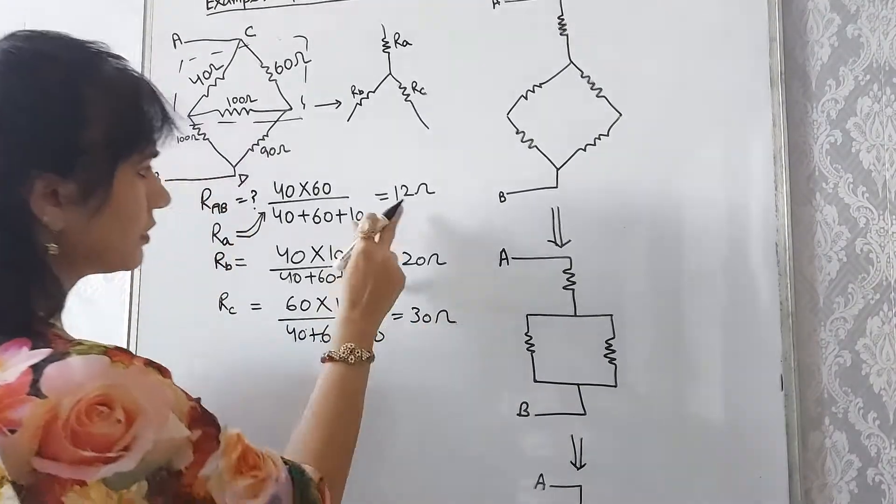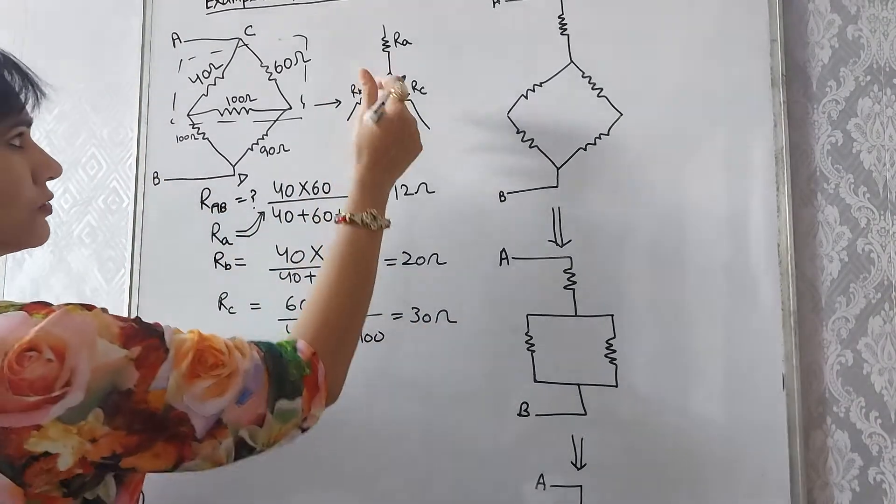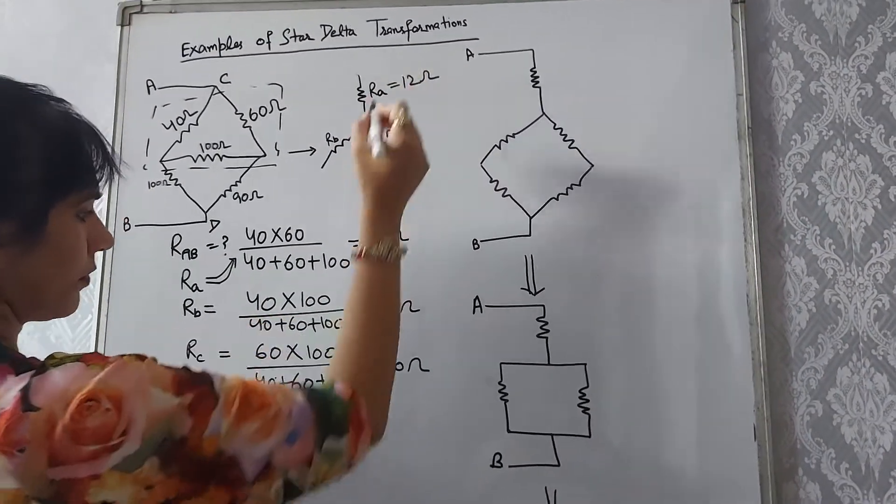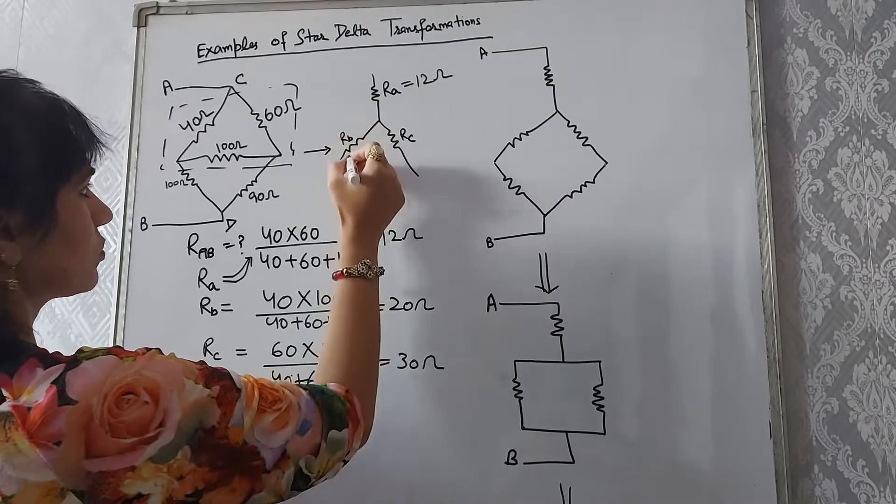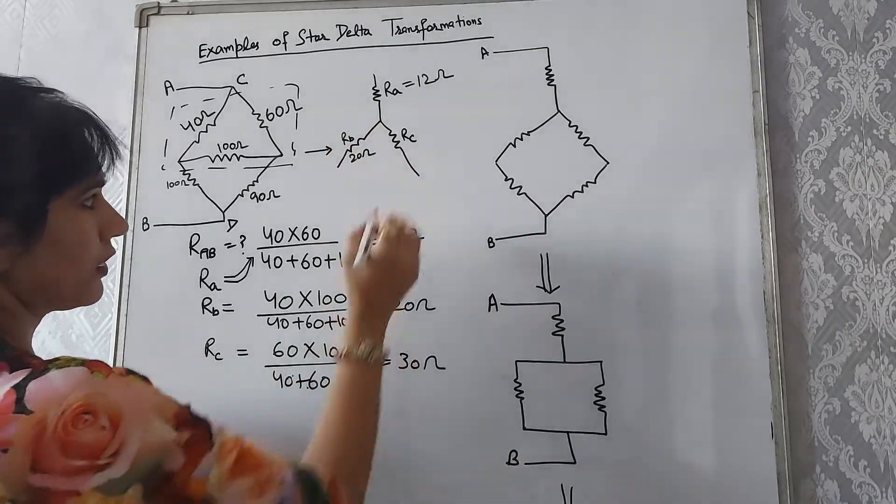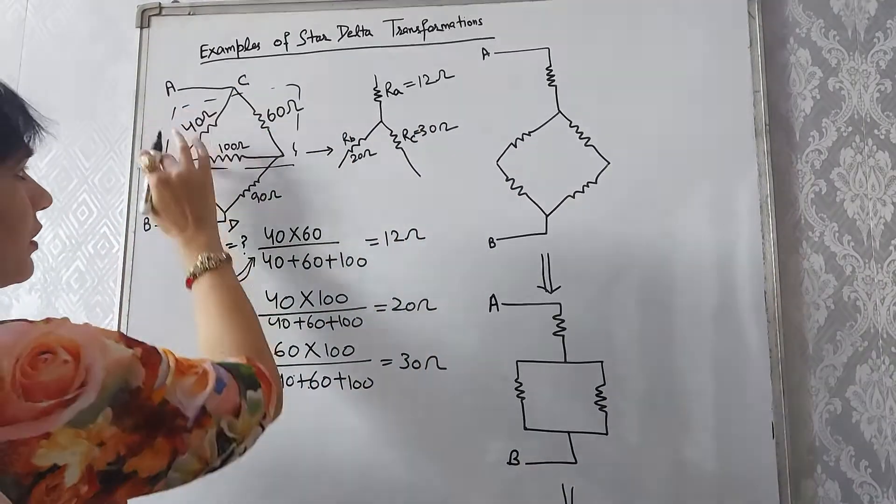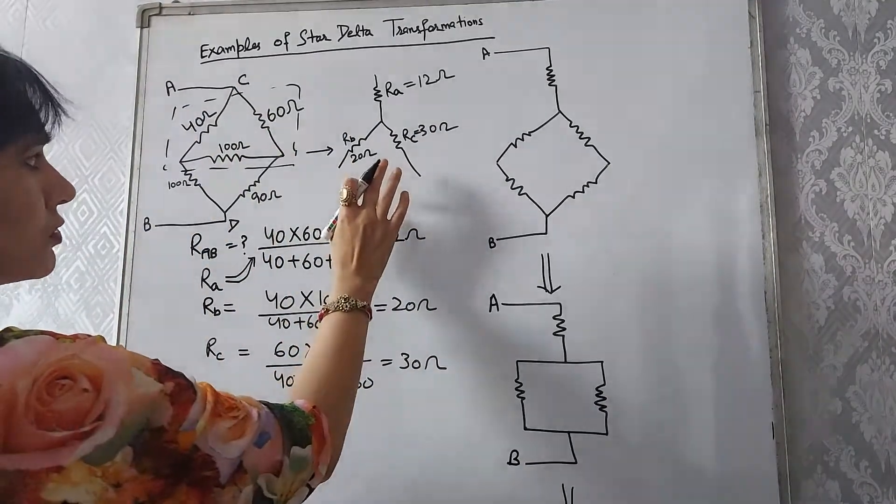So we find 3 resistances. The value of Ra is equals to 12 ohm, Rb is equals to 20 ohm, and Rc is equals to 30 ohm. So we convert this circuit into star.